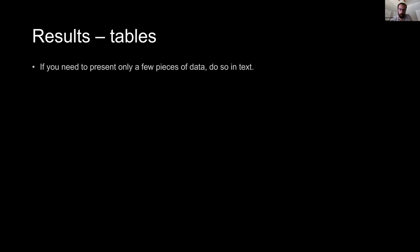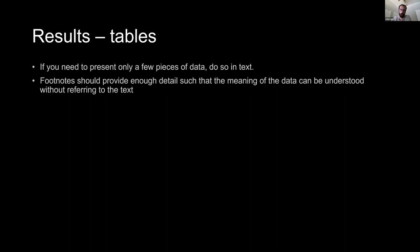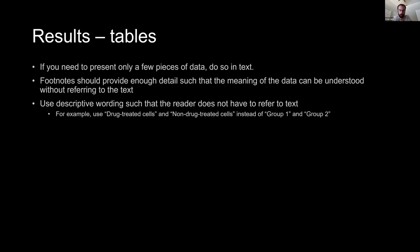In the tables, which go in the results section: if you need to present only a few pieces of data, do so in the text rather than making a whole separate table for it. The footnotes for a table should provide enough detail such that the meaning of the data can be understood without referring to the text. Use descriptive wording so the reader doesn't have to refer to the text — for example, use 'drug-treated cells' or 'non-drug-treated cells' instead of 'group one' or 'group two.'